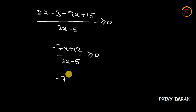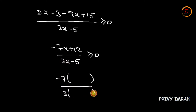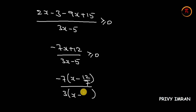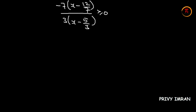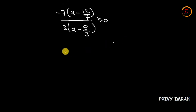Since the x coefficient should be plus 1, let me take minus 7 as common from the numerator and plus 3 as common from the denominator. In the brackets, the numerator becomes (x minus 12/7) and the denominator becomes (x minus 5/3), and the expression is greater than or equal to 0.